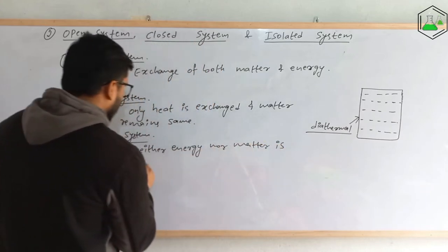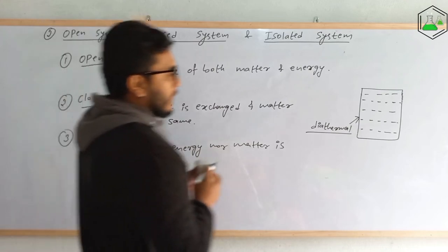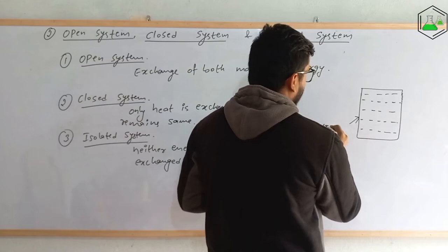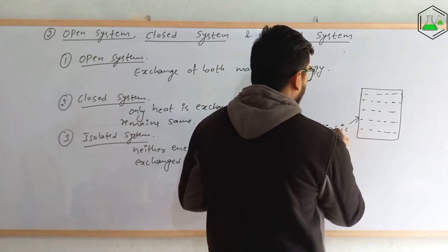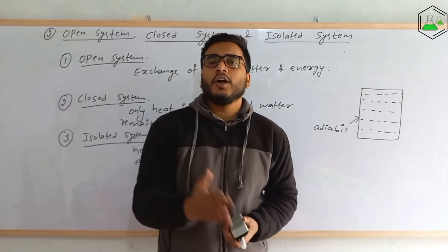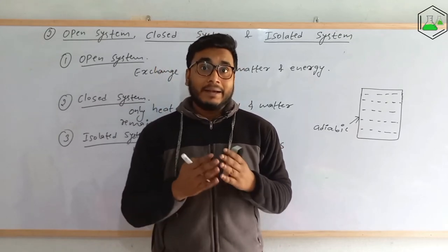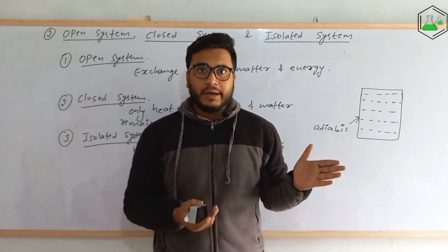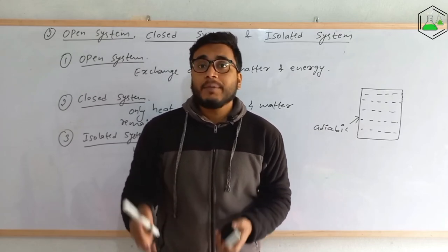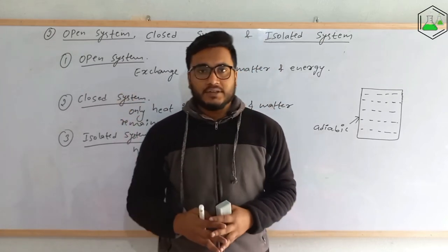In an isolated system, neither matter nor energy is exchanged between the system and the surrounding, and the wall will be adiabatic — it will not let anything change. An example is if you put hot water in a thermos flask: after some time, the temperature remains the same and matter does not get exchanged either. So that type of system is called an isolated system. I hope you understood about the three types of systems.